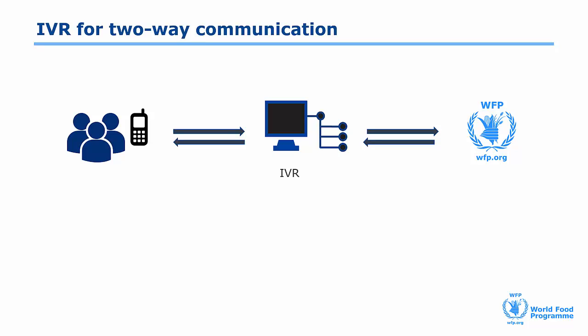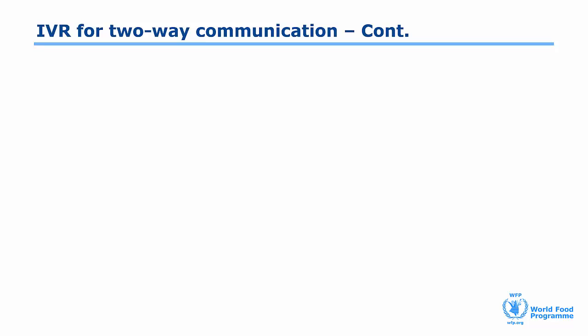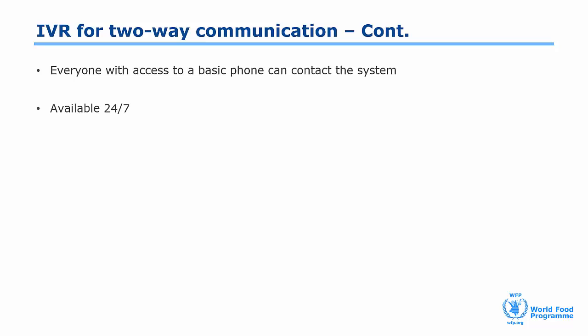This data can also help you understand what information people are interested in accessing. The audio recordings can be downloaded and listened to. The feedback recordings are followed up by the relevant units or departments. Like CATI, anyone with access to a basic phone can contact the IVR two-way communication system. While literacy is not an issue, some sensitization might be needed if communities are not already familiar with IVR. One advantage that IVR has over CATI is that it's available 24-7 and because it's automated, it's cheaper.